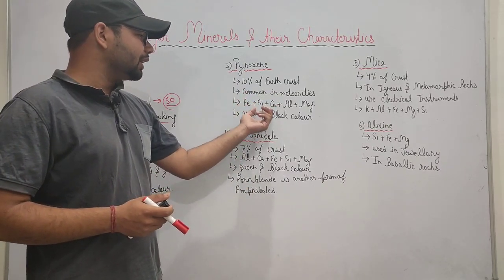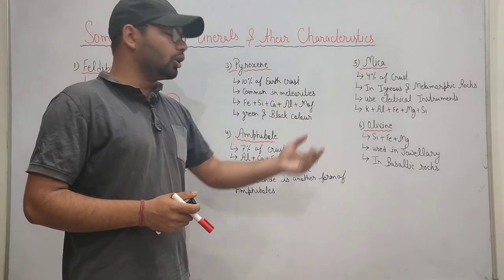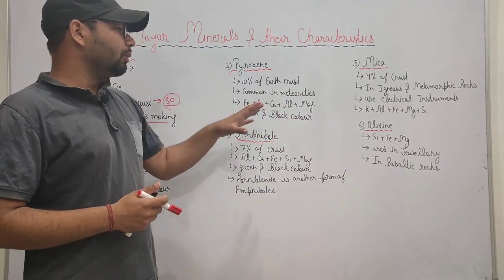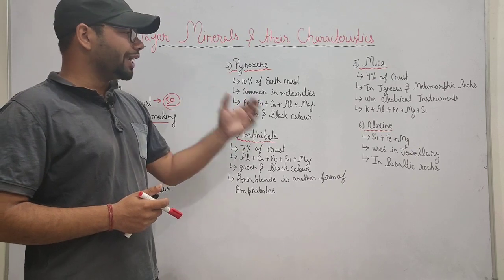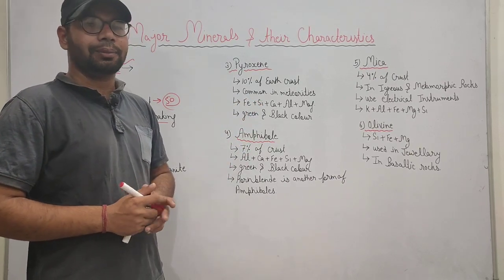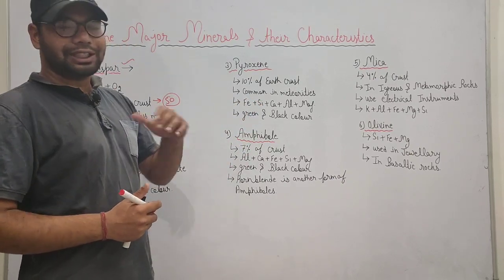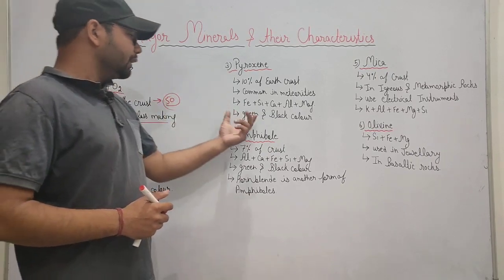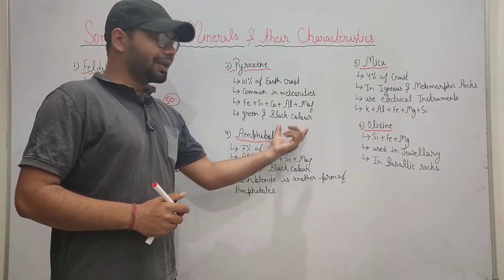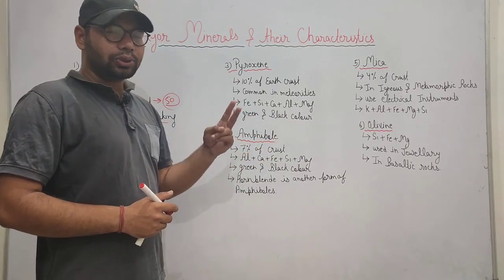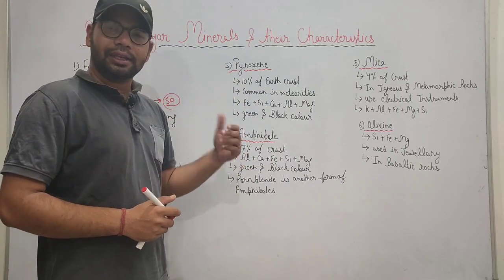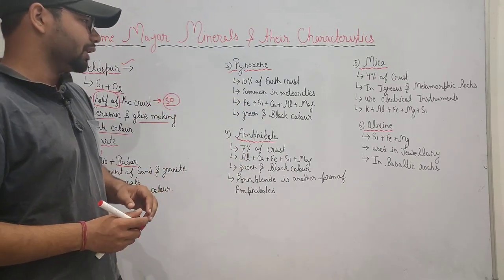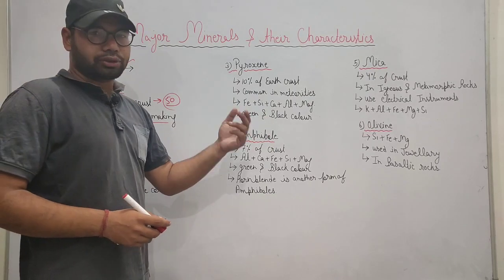It is made of iron, silica, calcium, and magnesium. This color is green and black — you can see two types.